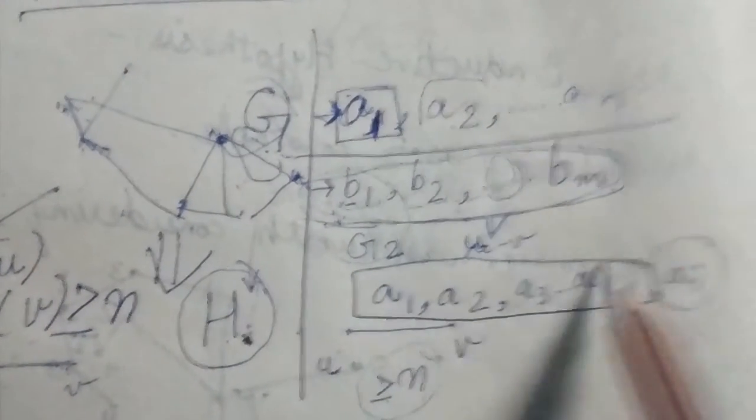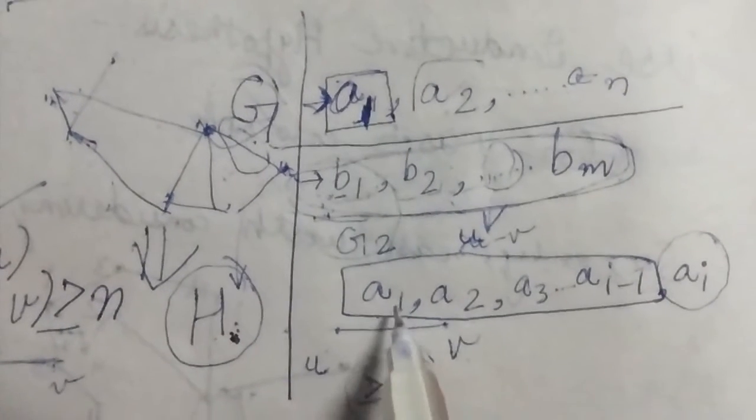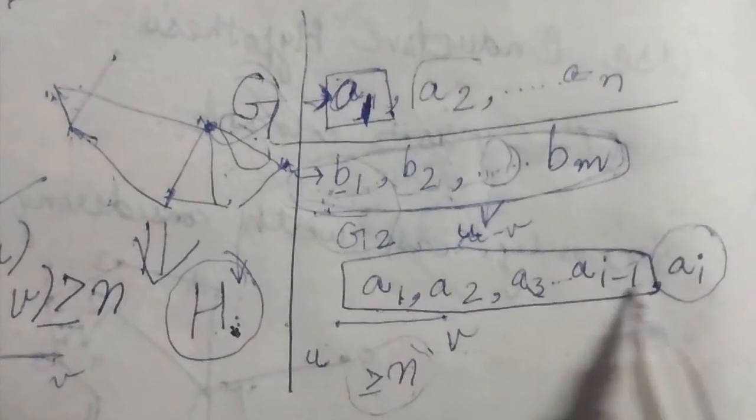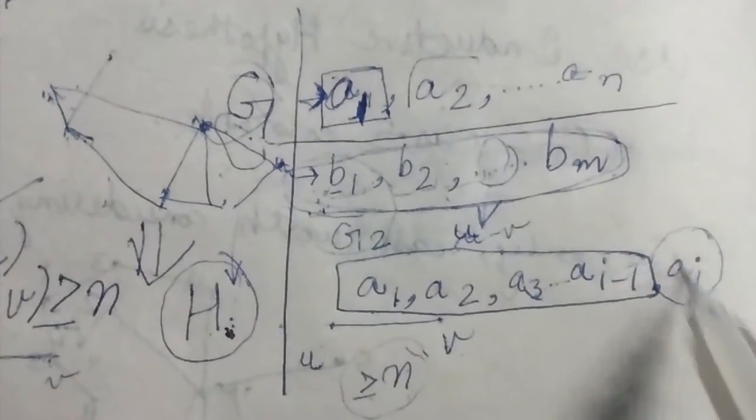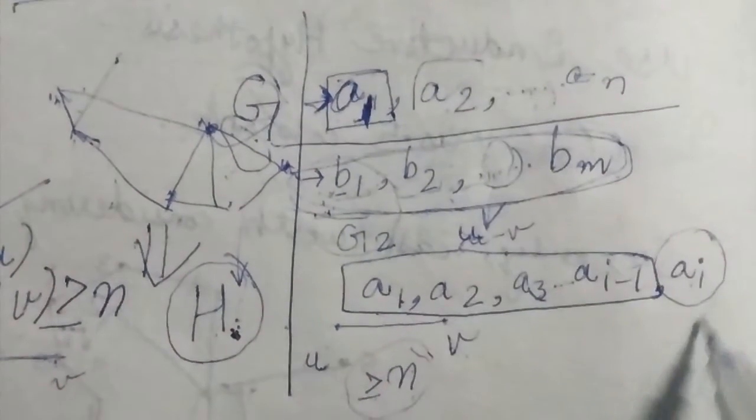So what I am talking about is, I have added a1, I have added a2, a3, all these edges I have added, and then I was adding ai in my first choice.